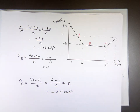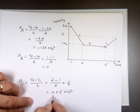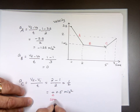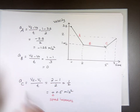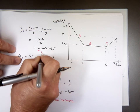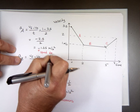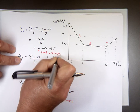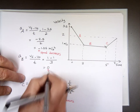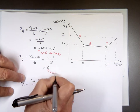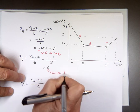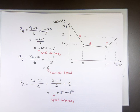Positive acceleration means speed is increasing. Negative acceleration means speed is decreasing. Zero acceleration means constant speed. So you can have positive acceleration, negative acceleration, or zero acceleration — which corresponds to constant speed.